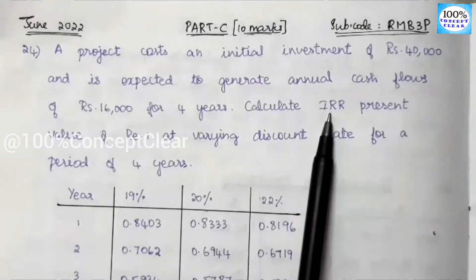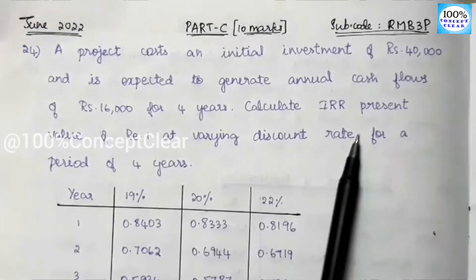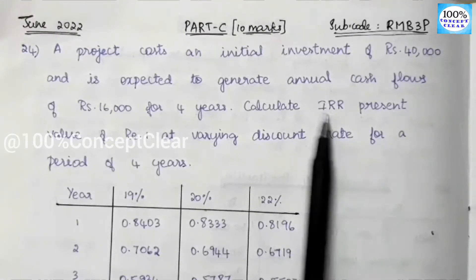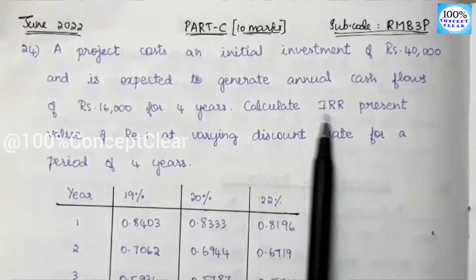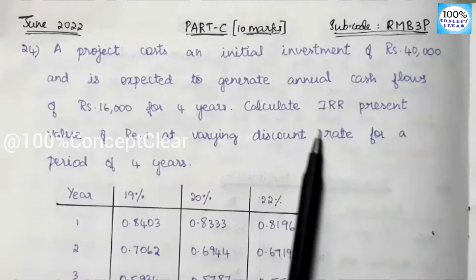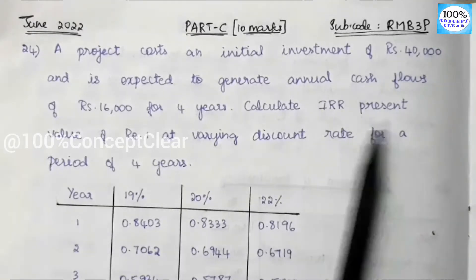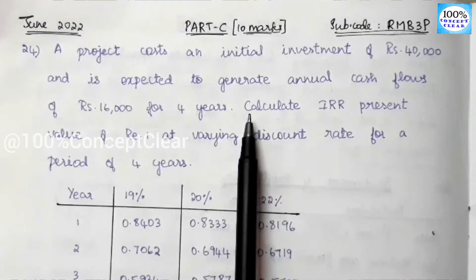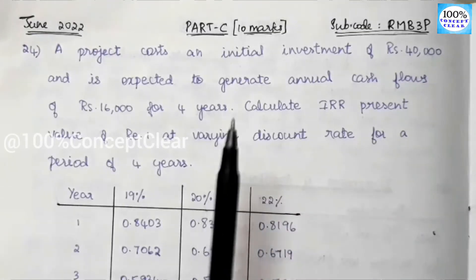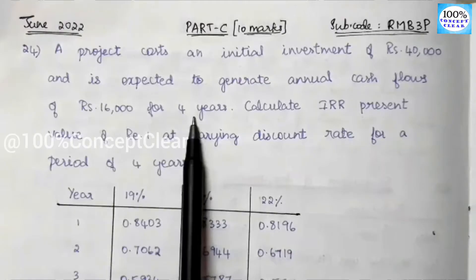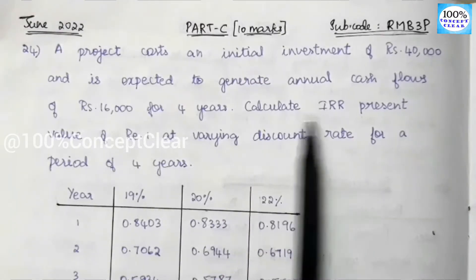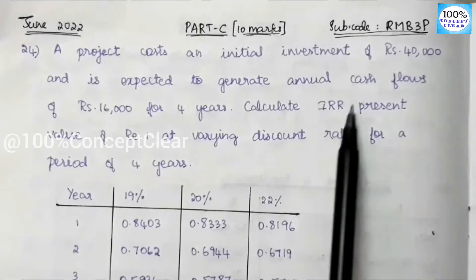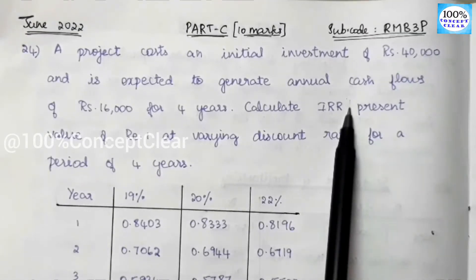We will use the trial and error method. In the Capital Budgeting playlist, we have an internal rate of return video explaining how to solve these two types. This is the uniform type. So the question is to calculate the IRR rate.